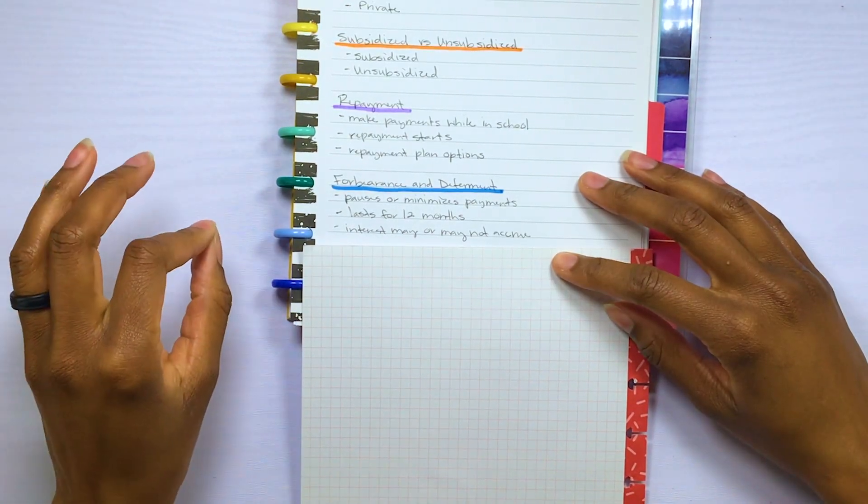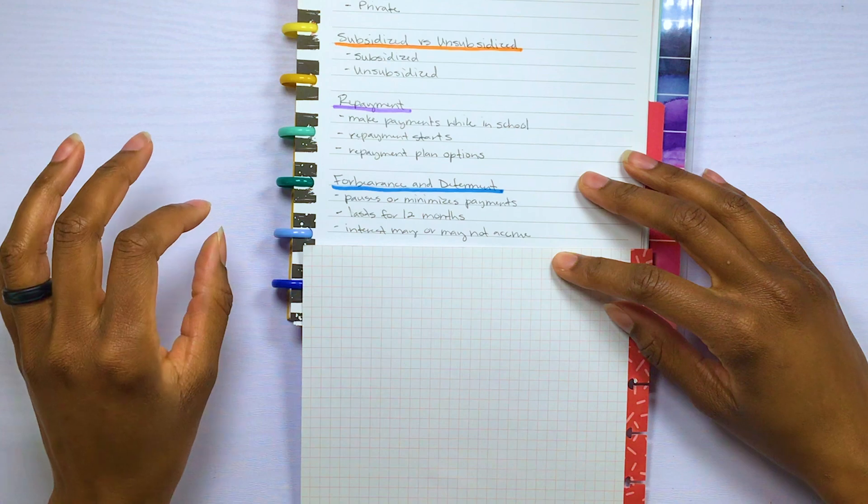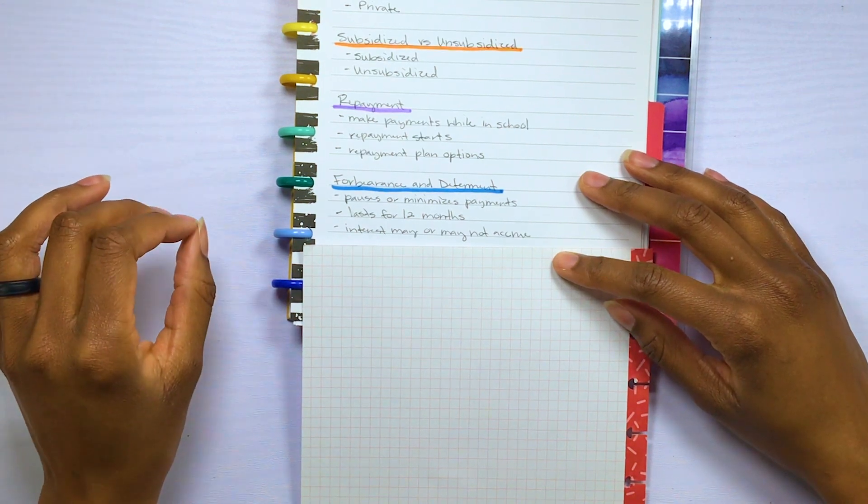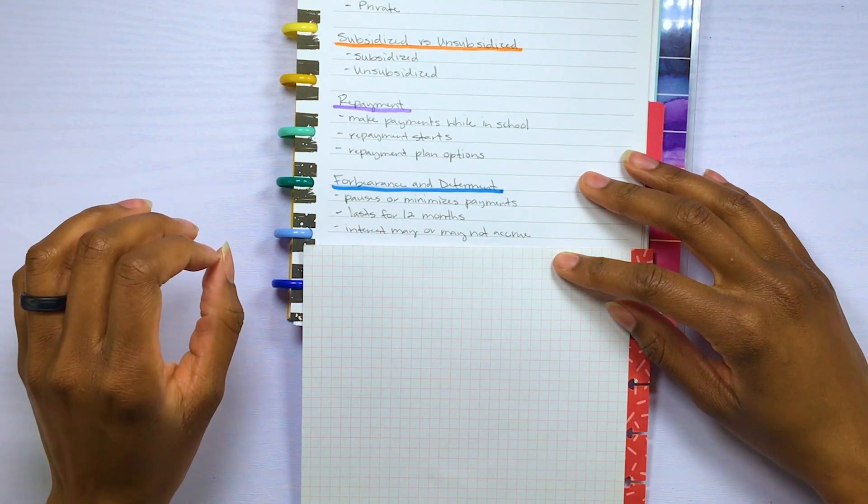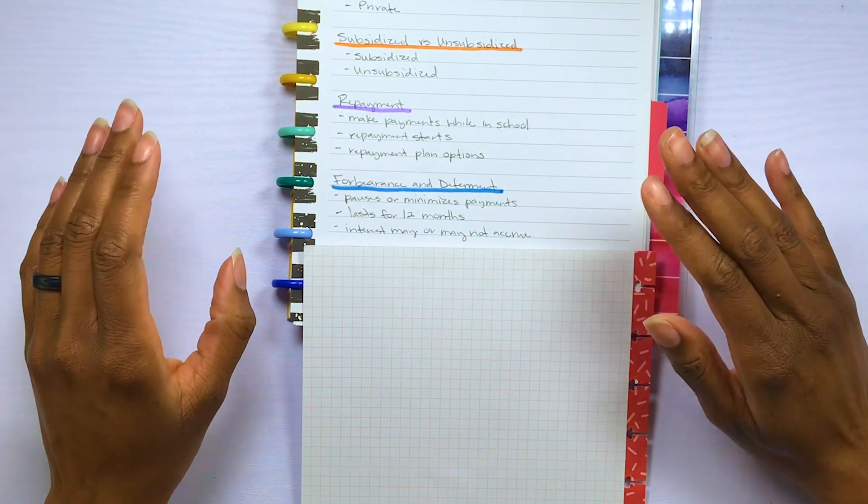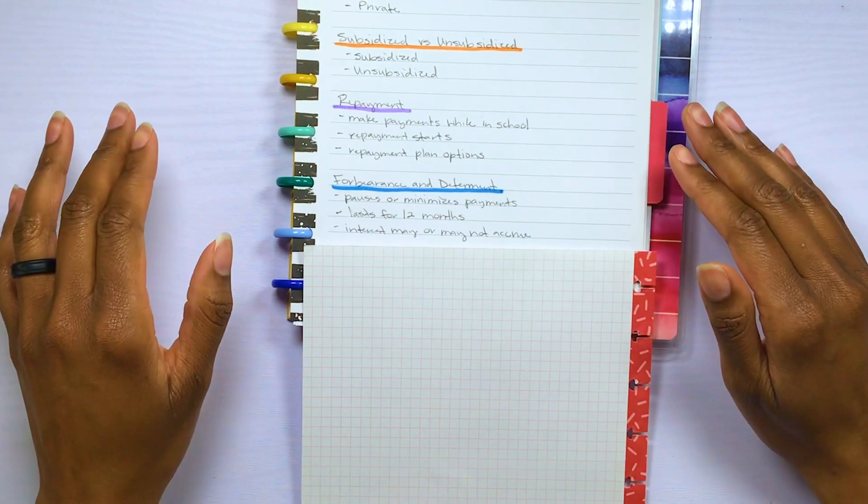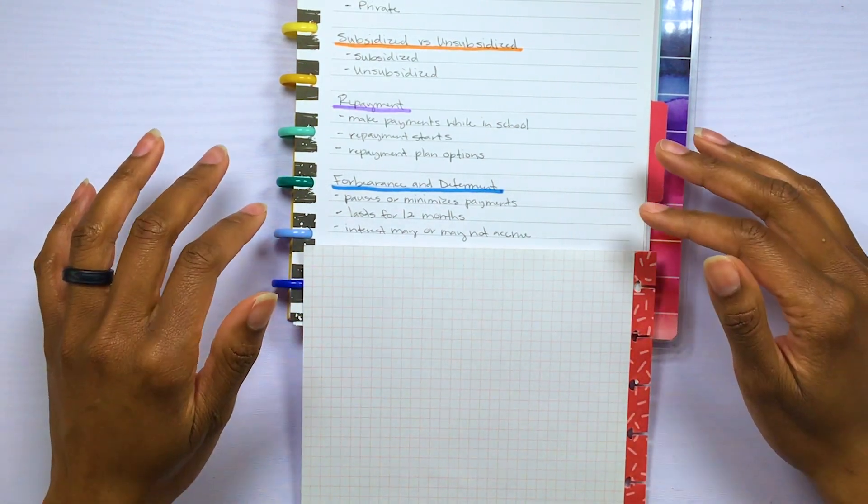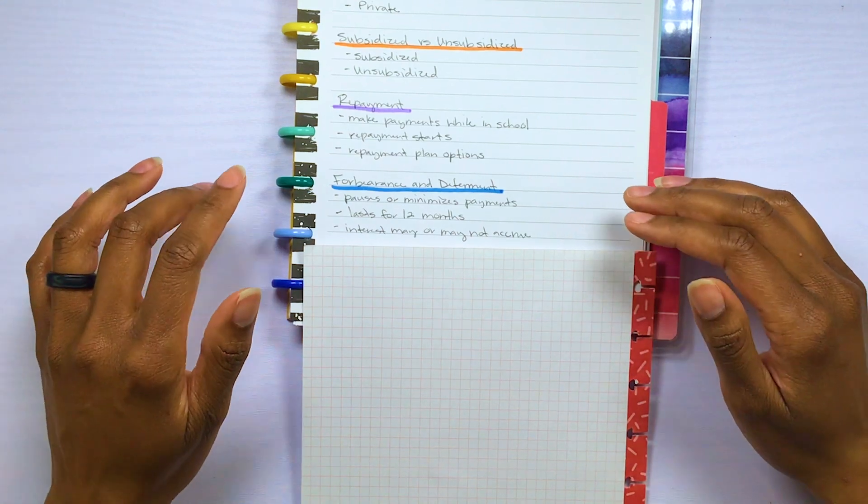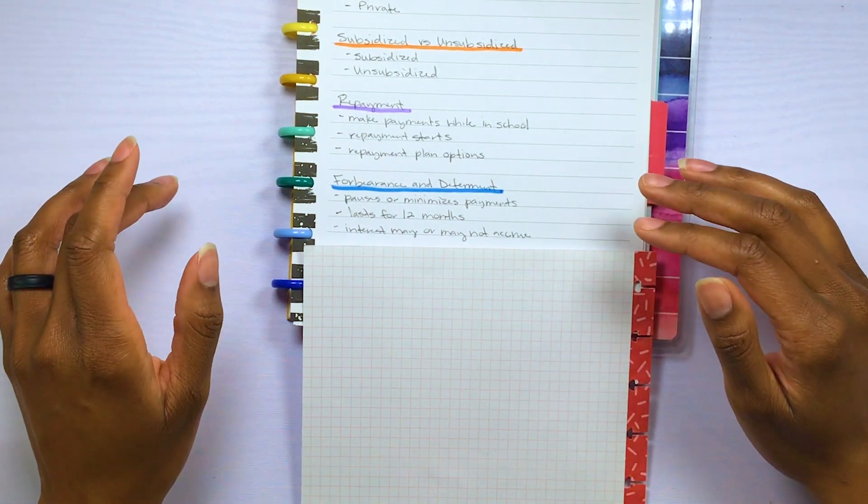One quick note because I don't want anyone to really panic, because we are on the COVID-19 forbearance right now. So a lot of federal student loans are on pause, and just know that interest is not accruing right now. So since the interest isn't accruing, there will be no interest capitalized when the COVID-19 forbearance ends.